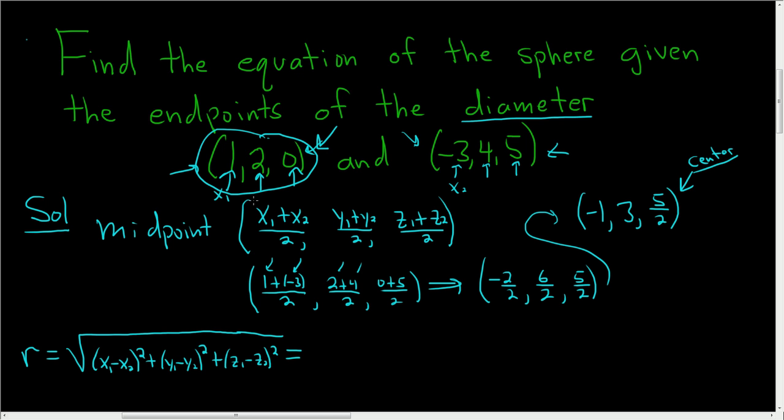So this is equal to... well let's let this be our x1, y1, z1, and then this will be our x2, y2, z2. So this is the square root of... let's see... 1 minus negative 1, so it will be 1 plus 1 squared, plus 2 minus 3, so 2 minus 3 squared, plus 0 minus 5 halves, so 0 minus 5 halves squared.